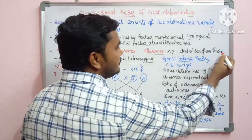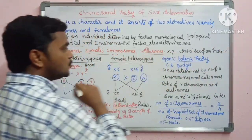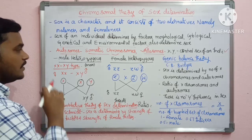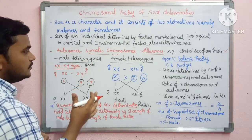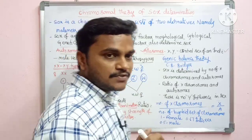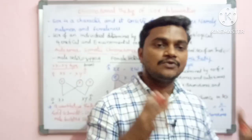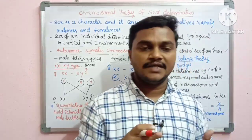The control of sex of an individual is maintained by allosomes. When we talk about sex determination, we consider two ways: male heterogamety and female heterogamety.